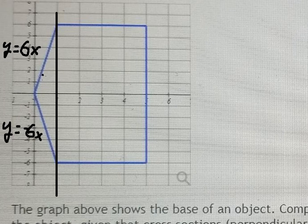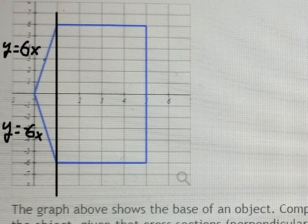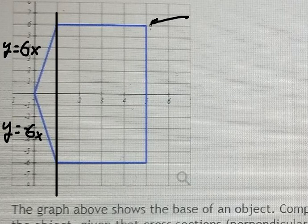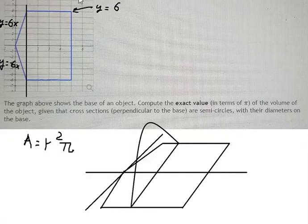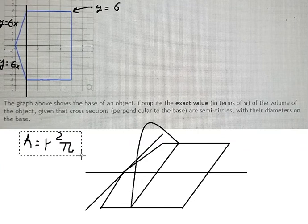This line here is y equal to negative 6x, but we just concentrate on this one only because the circle is about the radius. So we need to use the radius to find the area of the circle. This one is y equal to number six. Now we can set up this integration in here.